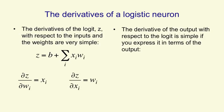The derivative of the output with respect to the logit is also simple if you express it in terms of the output. So the output is 1 over 1 plus e to the minus z, and dy by dz is just y times 1 minus y.